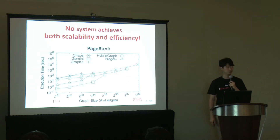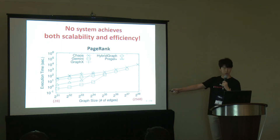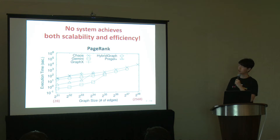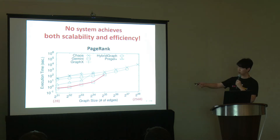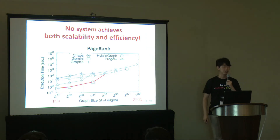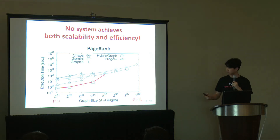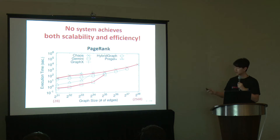Here is an experimental result for PageRank while doubling the graph size up to more than 200 billion edges. Surprisingly, no system achieves both scalability and efficiency at the same time. Although Gemini shows the best performance for small graphs, it cannot process large graphs due to out-of-memory error. Although Chaos can process up to the largest graph, its long execution time shows poor efficiency.